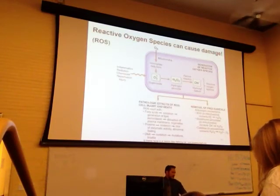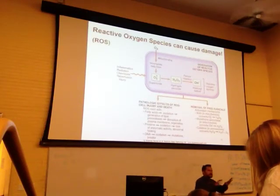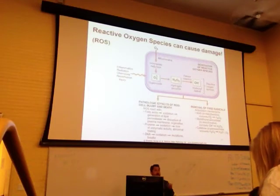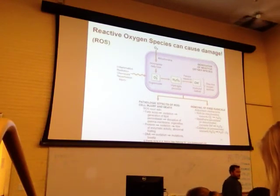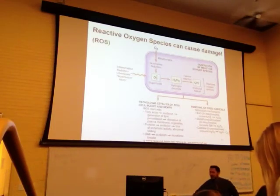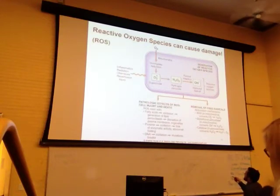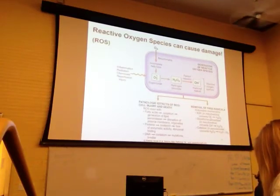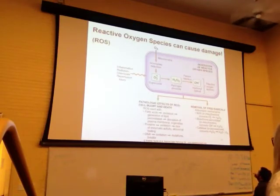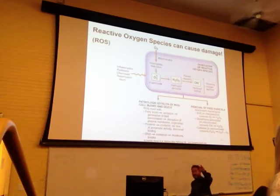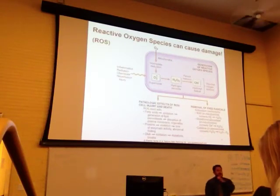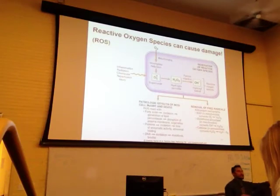Reactive oxygen species are a strategy that macrophages use to kill bacteria. They use what we call the Fenton reaction: a superoxide becomes a hydrogen peroxide, and through the Fenton reaction you get a hydroxyl radical — your free radical or reactive oxygen species. This reactive OH group can go and oxidize all sorts of different things, and if it comes across bacteria, it basically kills them.